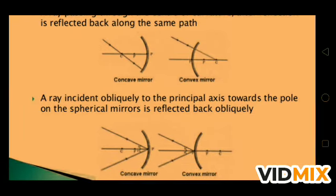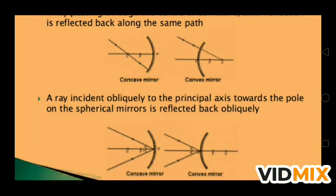Fourth rule: a ray incident obliquely to the principal axis towards the pole of the spherical mirror is reflected back obliquely, following the law of reflection — angle of incidence equals angle of reflection. When light falls at the pole of a mirror it reflects at the same angle. See both diagrams for convex and concave to distinguish this by the direction of arrows.